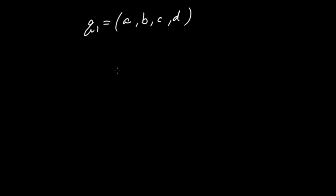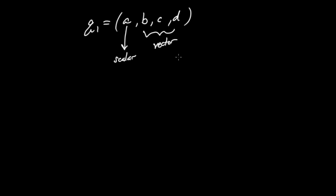One last piece of terminology: for a quaternion Q1 = (A, B, C, D), the first component A is called the scalar part, and the final three components (B, C, D), taken together as a three-dimensional vector, are called the vector part of the quaternion. We often divide quaternions into these two parts for specific applications in physics and computer graphics.